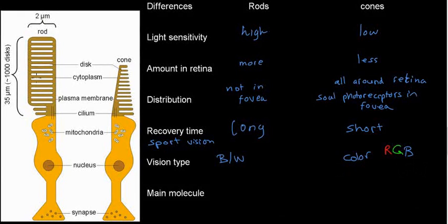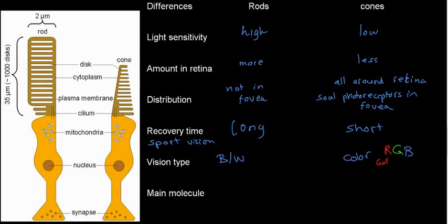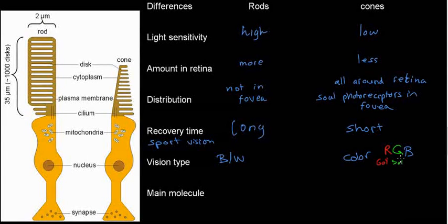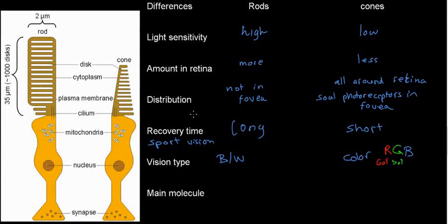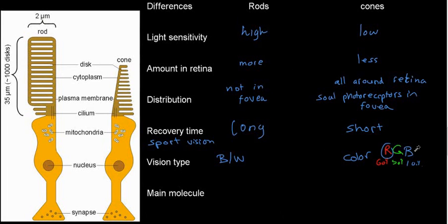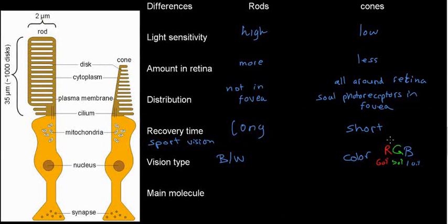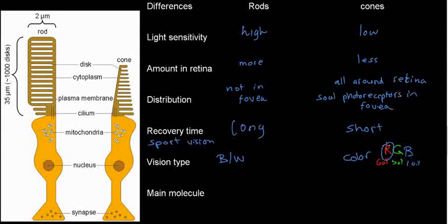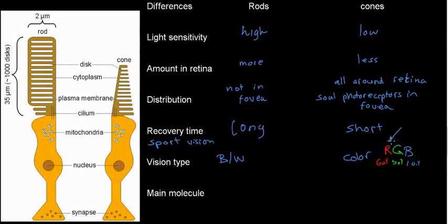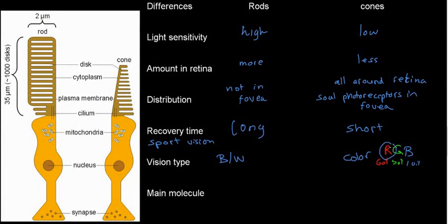We have the most red cone receptors — over 60%. For green, over 30%. For blue, less than 10%. So the most is red and the least is blue. That's why in dark rooms, submarines, and military settings you see red buttons and red consoles — even with little light, we can still distinguish red.